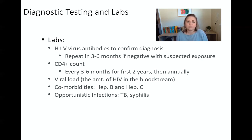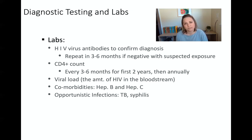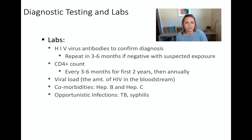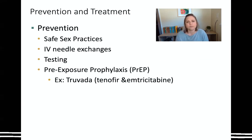We're going to test for opportunistic infections — infections that can take over the body because it has a compromised immune system. We're going to test patients with HIV for things like tuberculosis, checked most commonly with a QuantiFERON-Gold blood test, and syphilis, done through a blood test called an RPR test.